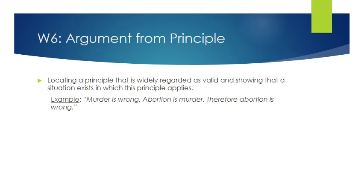W6 is the argument from principle — locating a principle that's widely regarded as valid and showing that a situation exists in which the principle applies. A classic example: 'murder is wrong; abortion is murder; therefore abortion is wrong.' You're taking the principle 'murder is wrong' and saying it applies to abortion. It's similar to argument from analogy, but instead of saying two situations are alike, you're saying there's a moral or abstract principle operating in both cases.